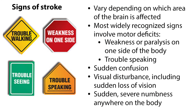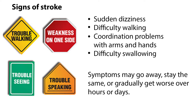Signs of stroke vary depending on which area of the brain is affected. The most widely recognized signs involve motor deficits, such as weakness or paralysis on one side of the body, and trouble speaking. Other symptoms include sudden confusion, visual disturbance including sudden loss of vision, sudden severe numbness anywhere on the body, sudden dizziness, difficulty walking, coordination problems with arms and hands, and difficulty swallowing. Symptoms may go away, stay the same, or gradually get worse over hours or days.